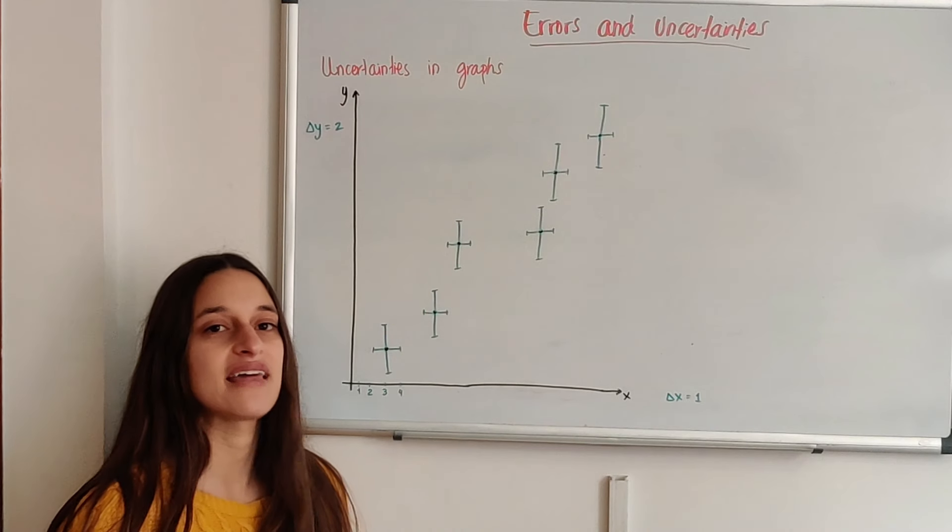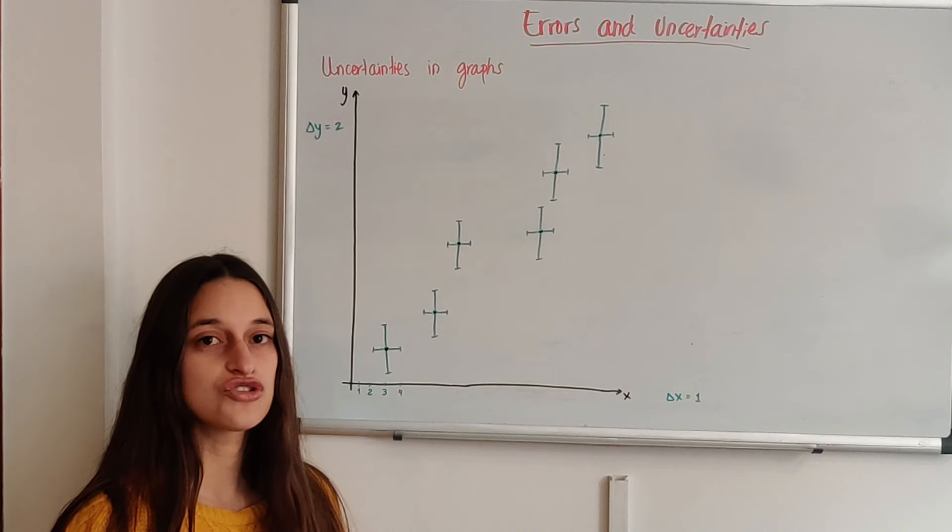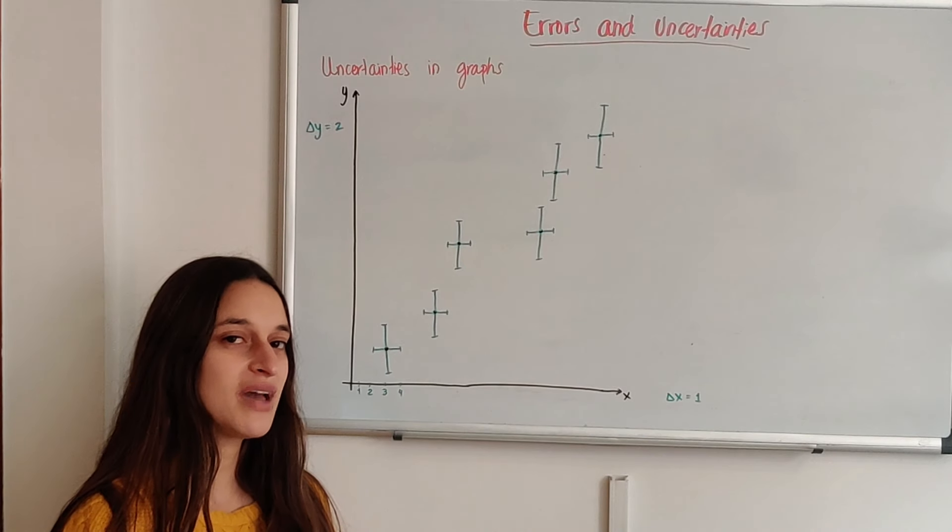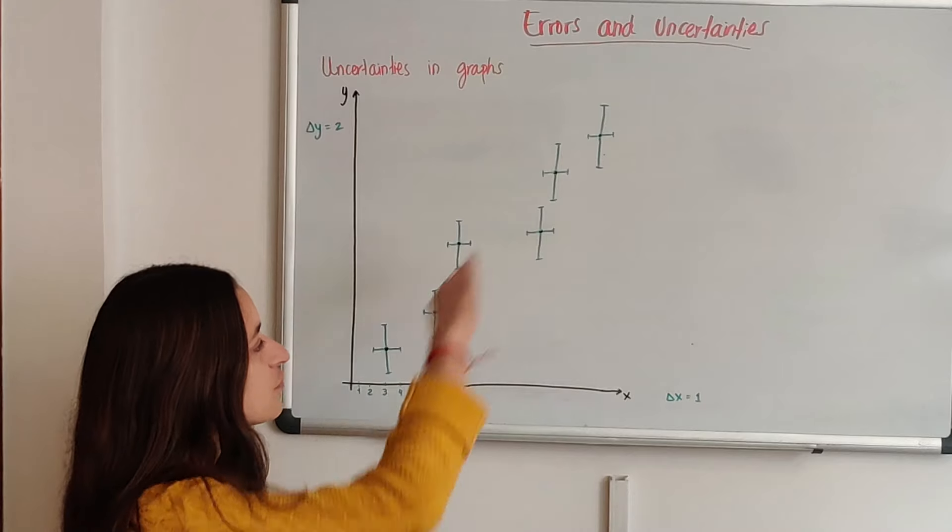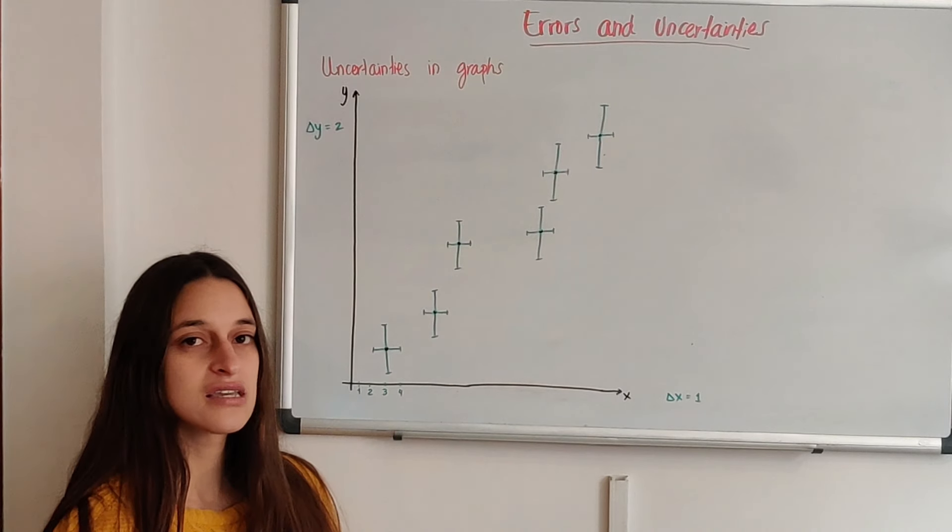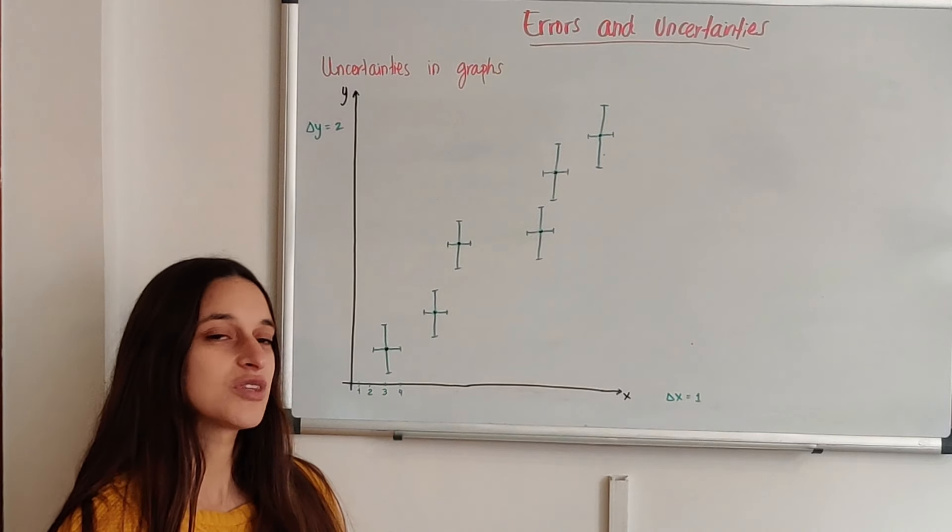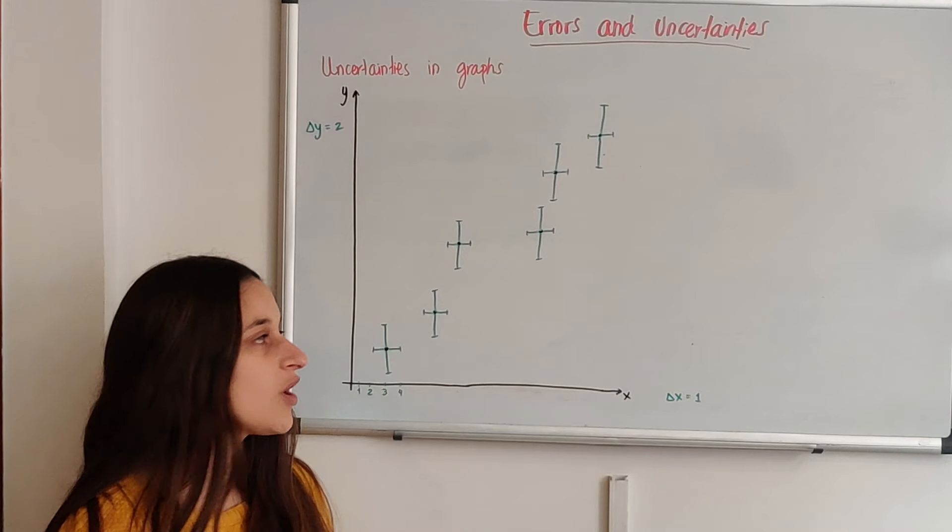So how do I make that line? Well, the trick is to draw first the line with the maximum possible slope that you can while passing through all of the green lines, and the one with the minimum possible slope, also while passing through all of the green lines.